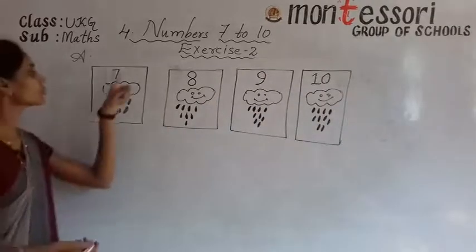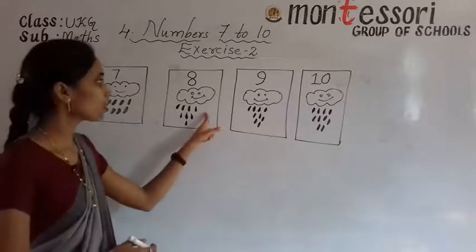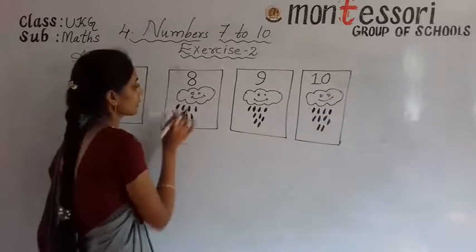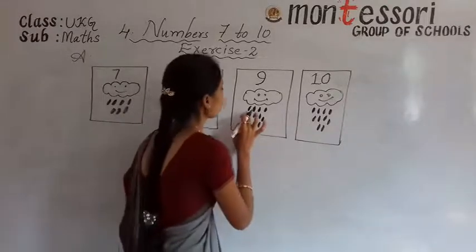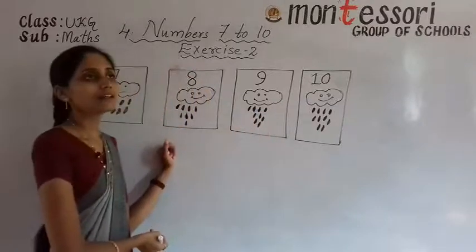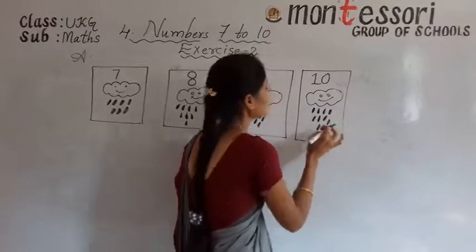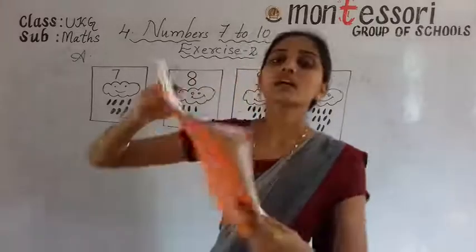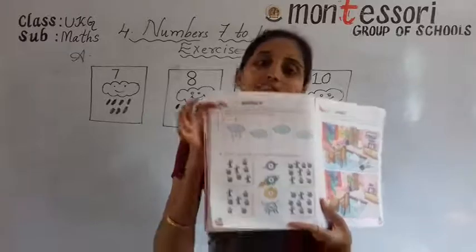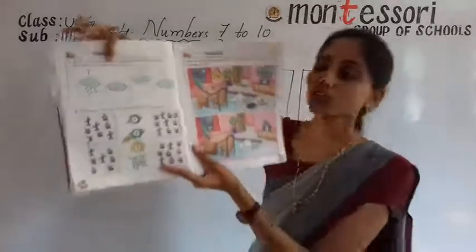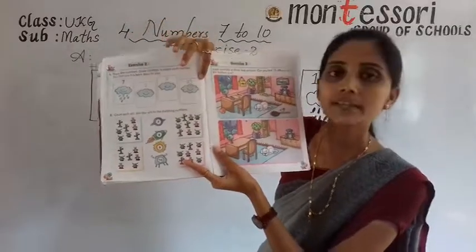So in the first box the given number is 7, so draw 7 raindrops. In second box the number is 8, so draw 8 raindrops. Next number is 9, so draw 9 raindrops. 10 raindrops in the last box. See, in first box it is already done for you — no need to draw. In second box draw 8 raindrops, in third box draw 9 raindrops, and in the last box draw 10 raindrops. Draw neatly.